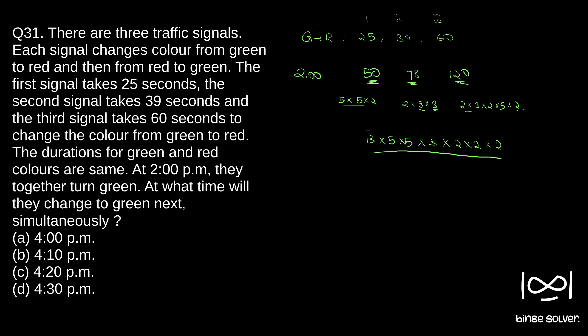So this is the LCM, this is the total seconds that it'll take for all these signals to change to green simultaneously. So we want minutes from this, so we'll divide it with 60. For 60 we can write 3 into 2 into 5 into 2.